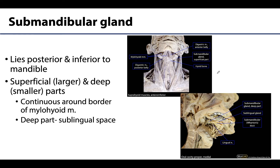Much of what we have seen thus far of the submandibular gland has been the superficial part, and you can see that it is the largest part of the submandibular gland. It's going to be located in that submandibular triangle, posterior inferior to the mandible. But this superficial part is continuous around the border of the mylohyoid muscle — one of those suprahyoid muscles, the one that forms the floor of the mouth — with the deep part of the submandibular gland, which is located in the sublingual space between the oral cavity proper and the mylohyoid muscle.